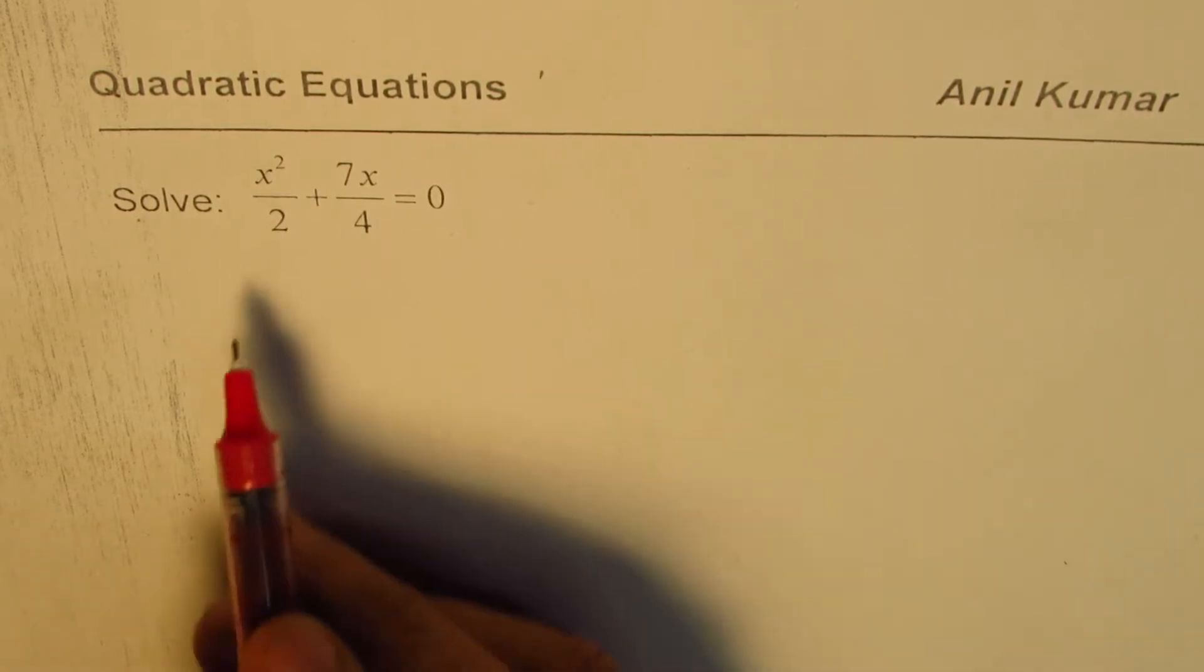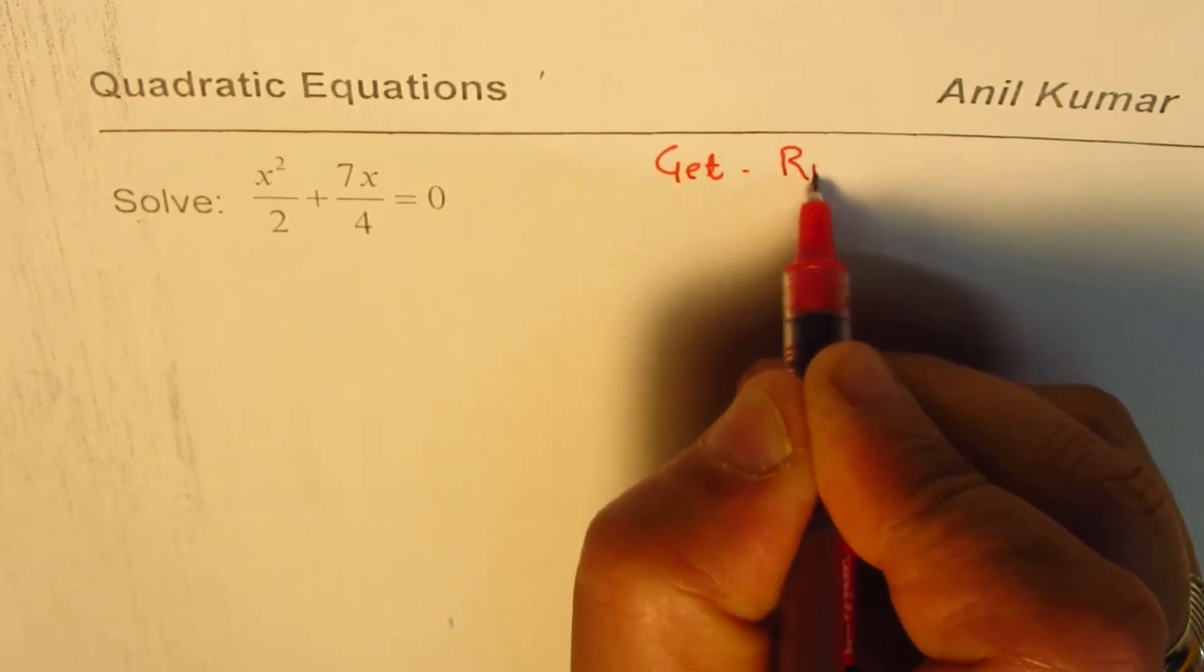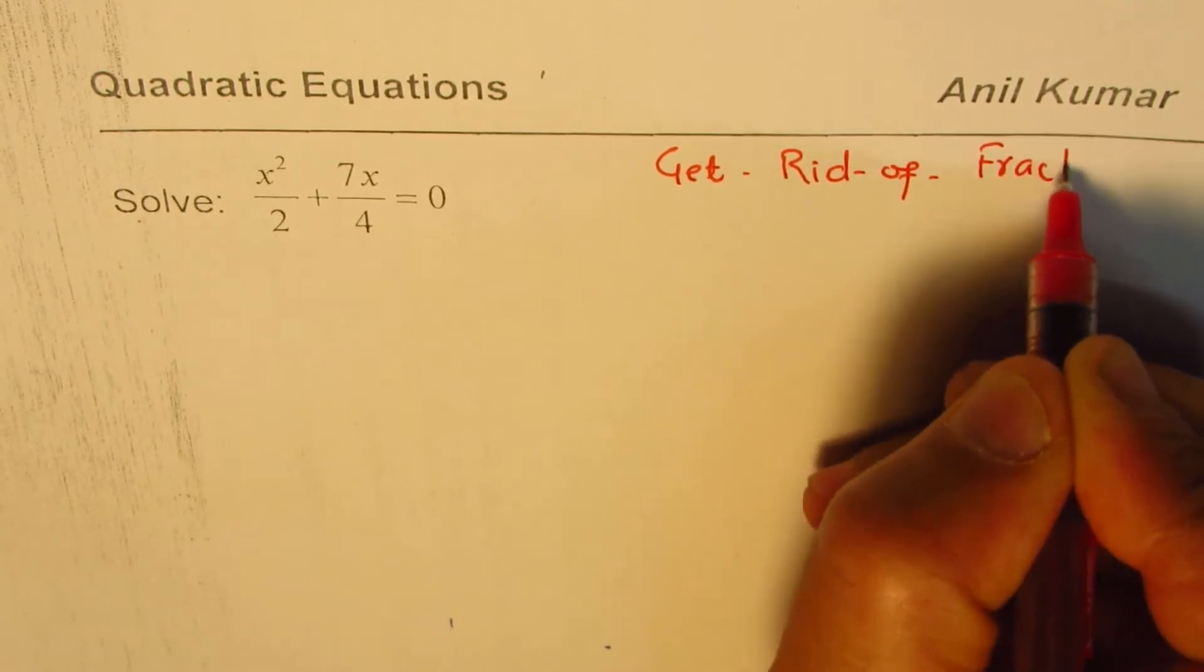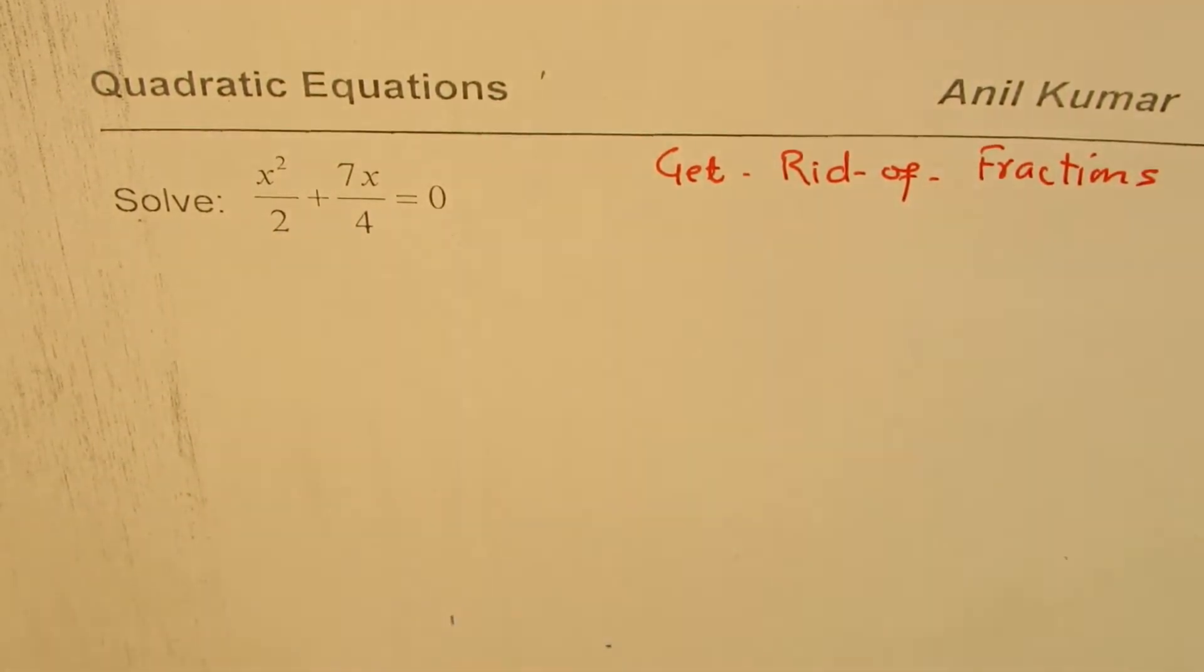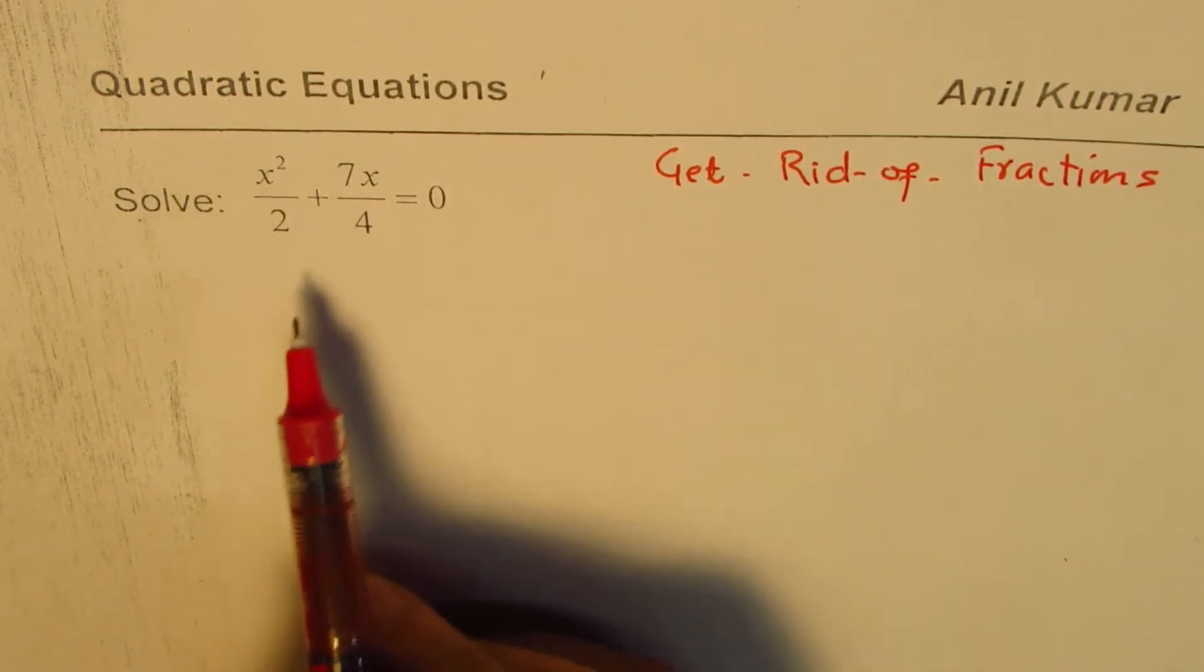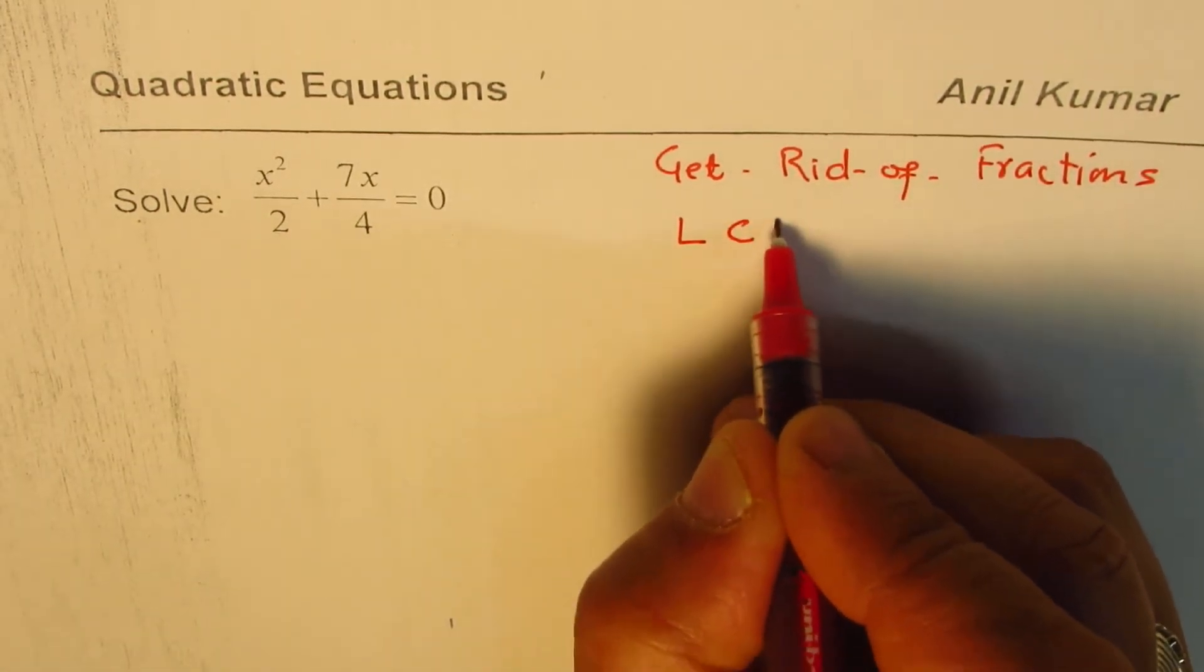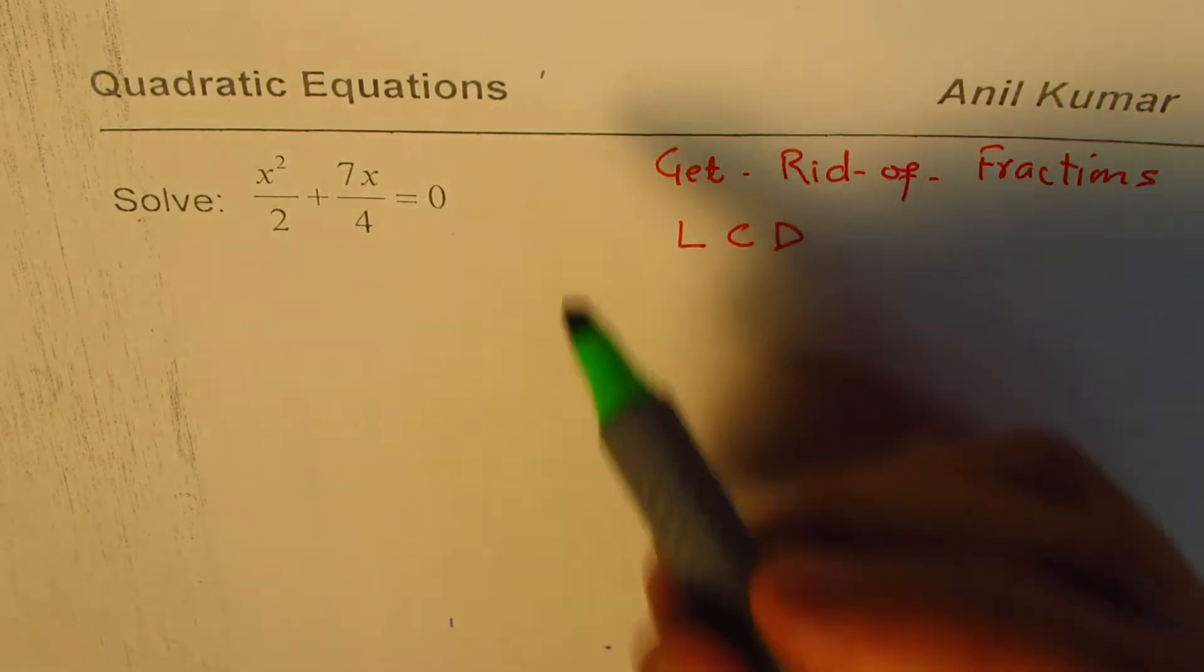Well, you know my strategy. It is get rid of fractions. So that is the strategy which we always use to solve equations involving fractions. Now, how do we get rid of fractions? The key is lowest common denominator. So that is the key to get rid of fractions.